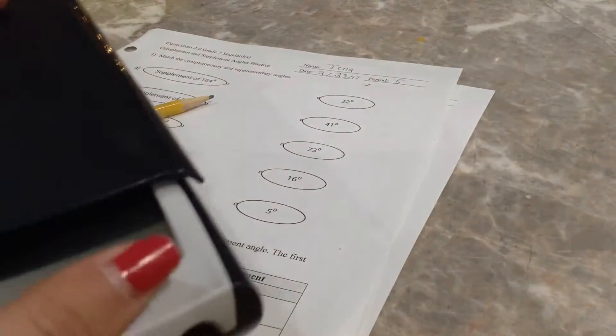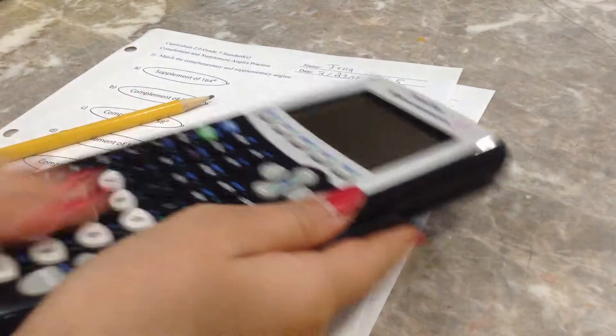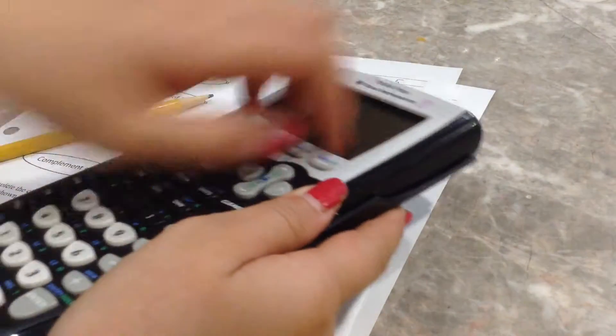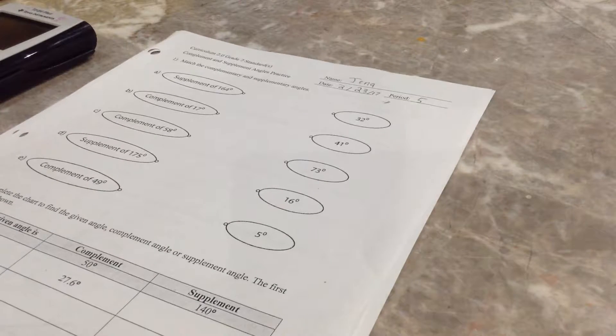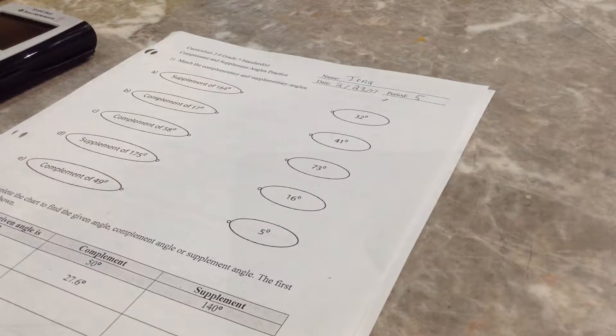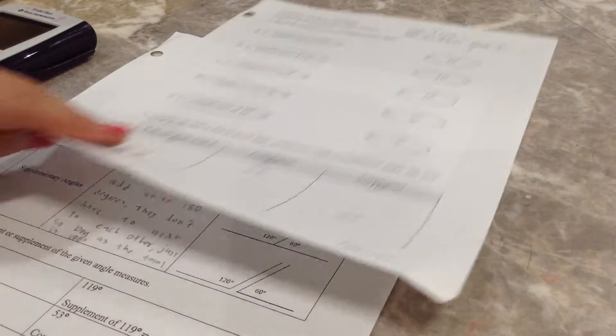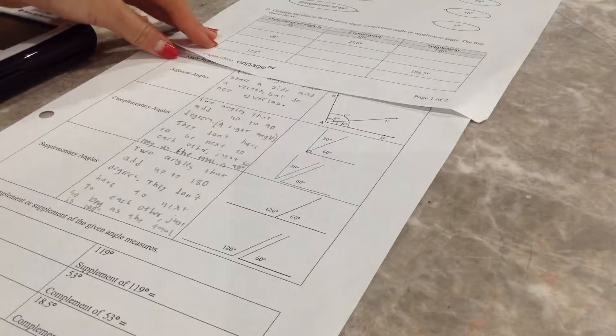So let's get this open. So, yep, a calculator. I'm sure you guys all know what a calculator is, but let's just start. Supplement of 164 degrees. So, I have to look at the definitions still, but two angles add up to 180 degrees.